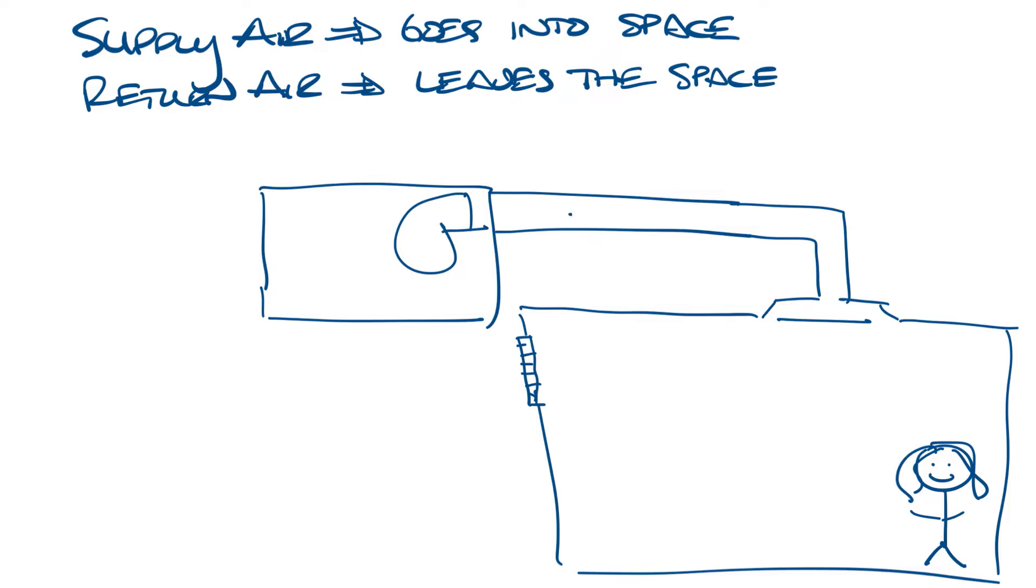So the supply air comes in through the air handler, supplies the space, and now let's duct our return back to the air handler as well. And the return air comes out and in this case goes into the air handler.